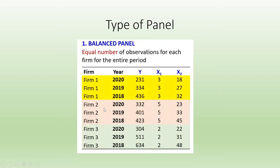There are different types of panels. The first is a balanced panel, where there is an equal number of observations for each firm for the entire period. For example, if firm 1 has three observations for three years, the same applies to firm 2 and firm 3.